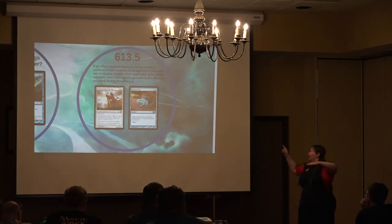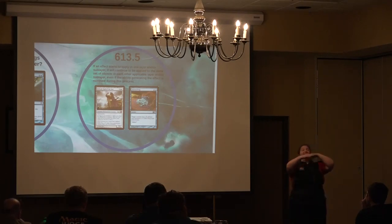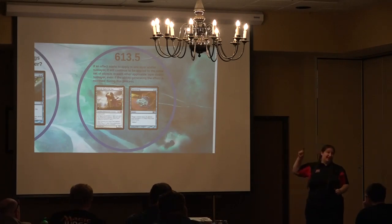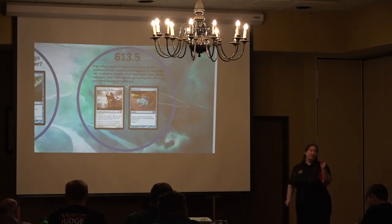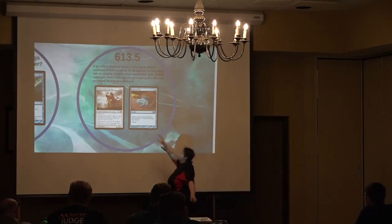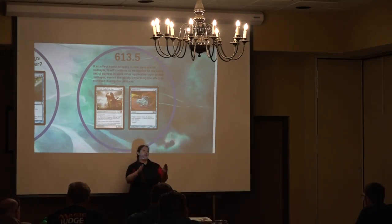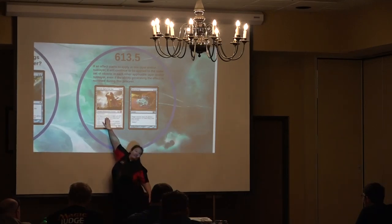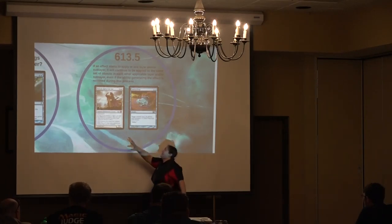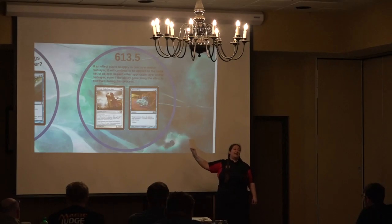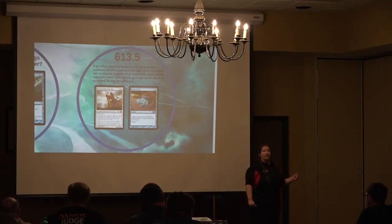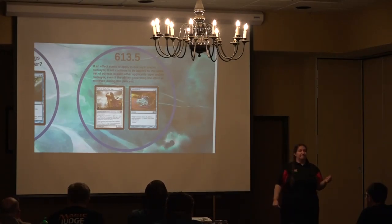So as we go through our layers, in layer four — the type layer — Heliod's devotion ability says whether or not it's a creature. And then we have Turn to Frog. So if devotion is five, it's a creature, and then someone casts Turn to Frog. Up in layer six, it loses its abilities. So even though it loses this ability, it's not erased — it's like we just took a blank piece of paper and laid it on top. We can't see it anymore; it just has a blank text box and doesn't have any abilities. However, we've already applied the ability that determines whether or not it's a creature.